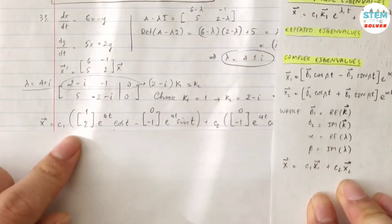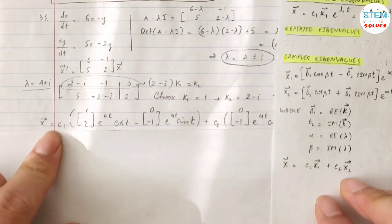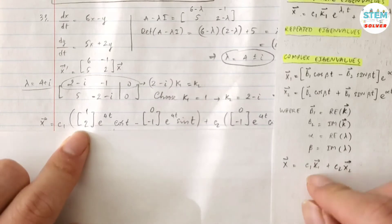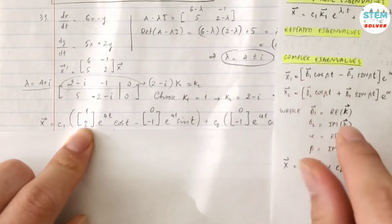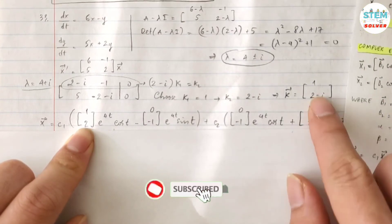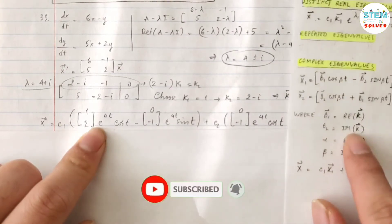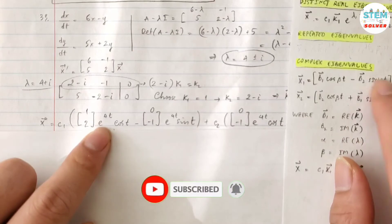Alright, let's go back to your final answer. So I have vector x equals c1 times vector b1, which is real part of k, which is [1, 2], times, for this one I distribute this in, okay?